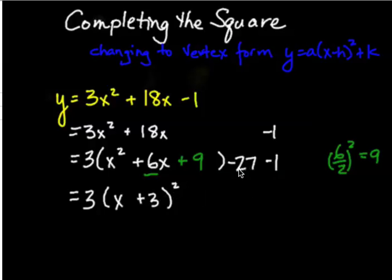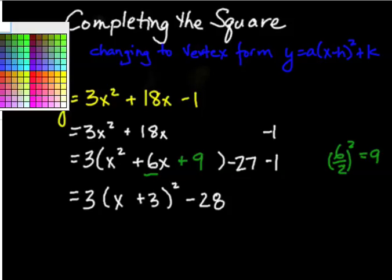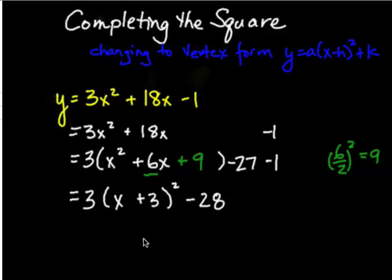And at the very end of the equation, all I have to do is just simplify my like terms. So I have negative 27, negative 1, so I have negative 28. That's it. We're done.